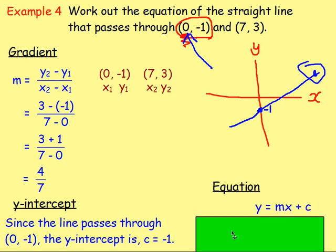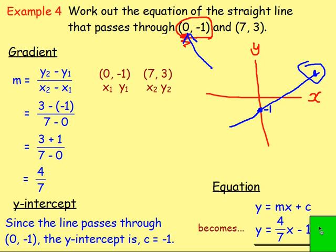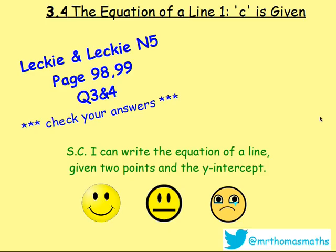So y equals mx plus c becomes: replace m with four sevenths and replace c with negative 1. Adding a negative is just subtract, so we have y equals four sevenths x take away 1. For every single one of these questions, all we're doing is replacing m with the gradient and c with the y-intercept. Practice some of these and see how you get on.